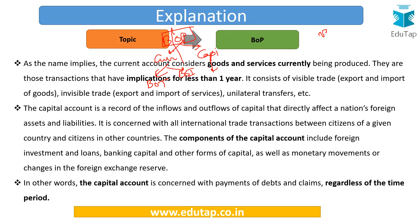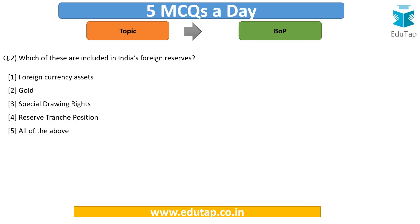There is a clear demarcation between the current account and the capital account. The current account considers only those goods and services currently being produced — transactions with implications for less than one year. In the capital account, there is no such time limit; it is regardless of the time period. Wherever you see the term 'capital,' it refers to a long-term thing. The capital account records inflows and outflows of capital that directly affect a nation's foreign assets and liabilities.